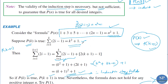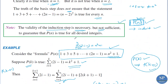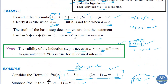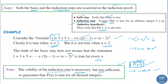We verified that when n equals 1 is not true. So the induction proof requires both the basis step and the induction step as essential components. The induction step is necessary but not sufficient.